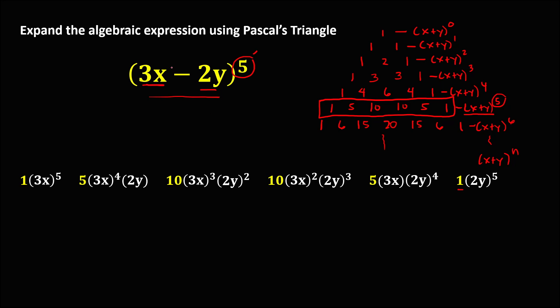Then for the operation — since this is a minus, the signs must alternate. The first term is always positive. Since it's minus, we alternate: positive, negative, positive, negative, positive, then negative.